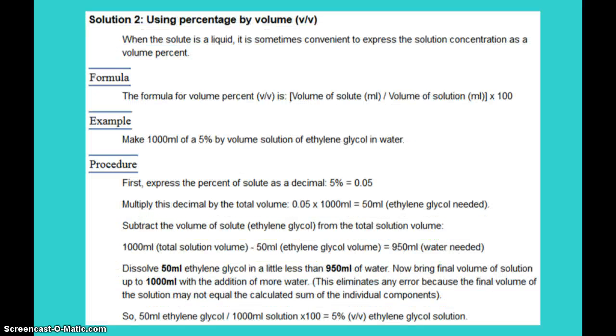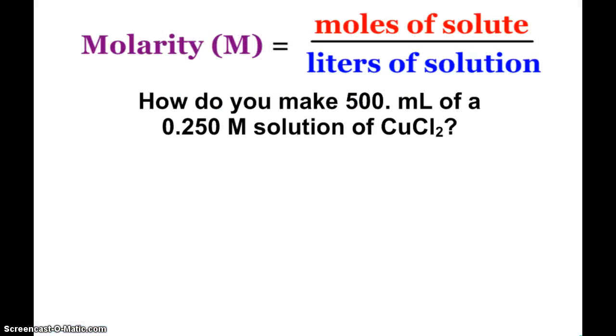Same with volume-volume. So here we have a 5% by volume solution of ethylene glycol in water, which ends up being 50 mils of ethylene glycol. Same thing. You don't put in 50 mils of ethylene glycol, 950 mils of water, and assume it's going to be 1,000. Because when liquids mix together, oftentimes the molecules in this instance, the ethylene glycol, will mix in with the water and the volume will shrink a little bit. So that's just important to note.